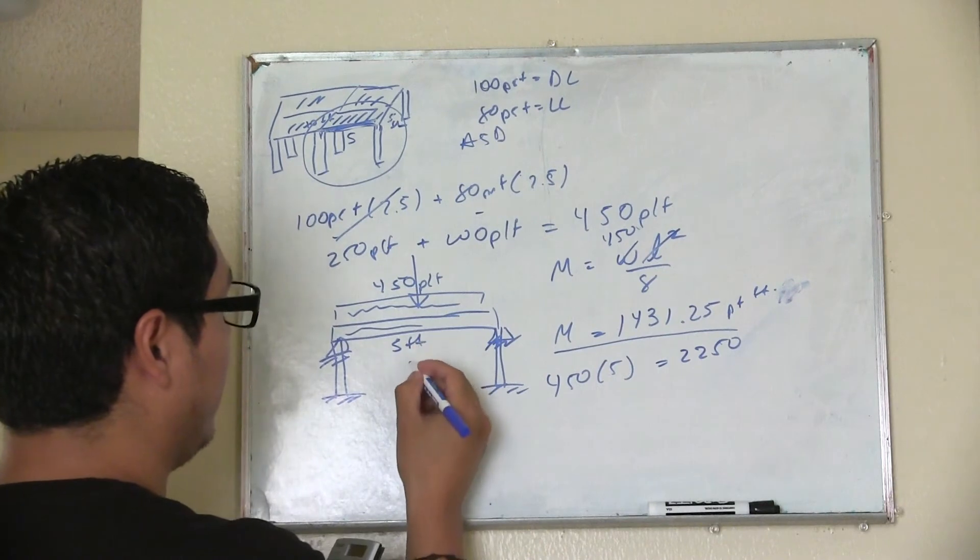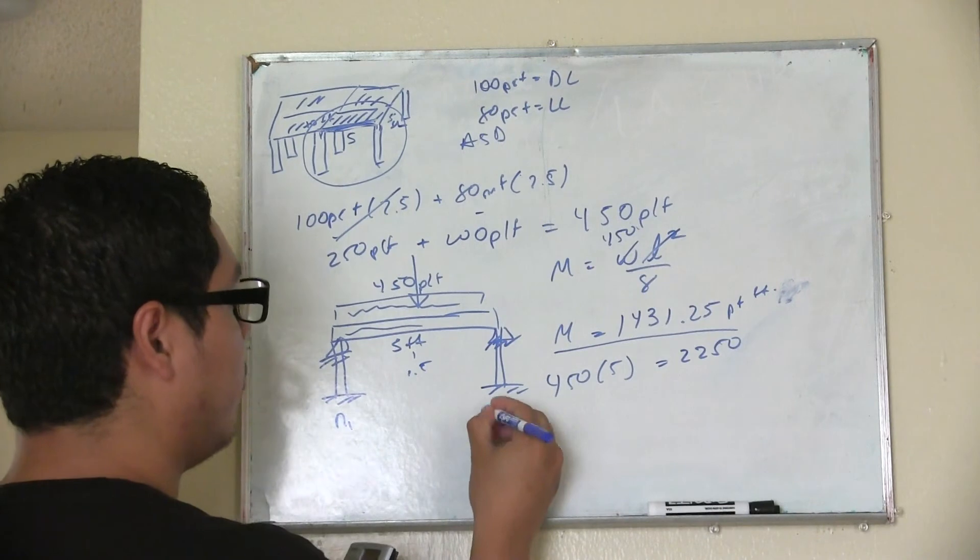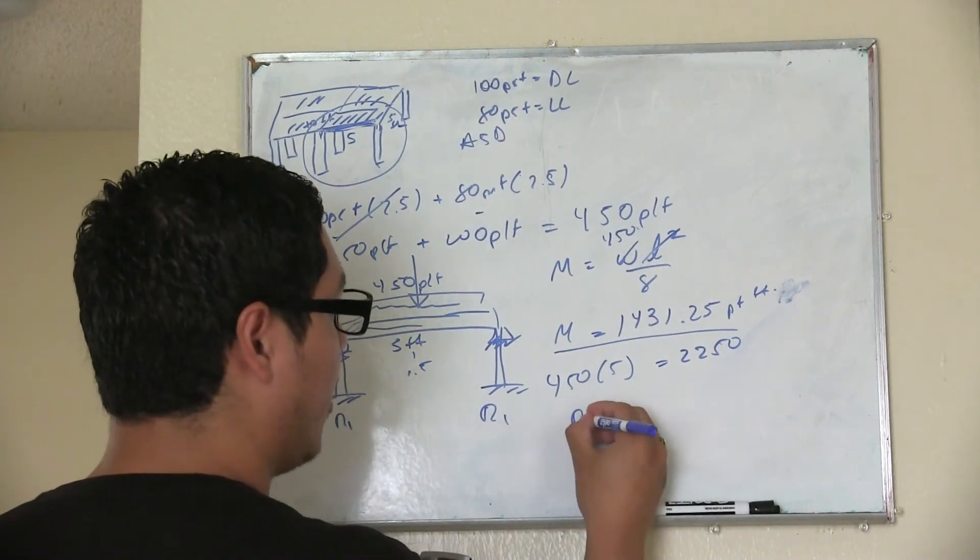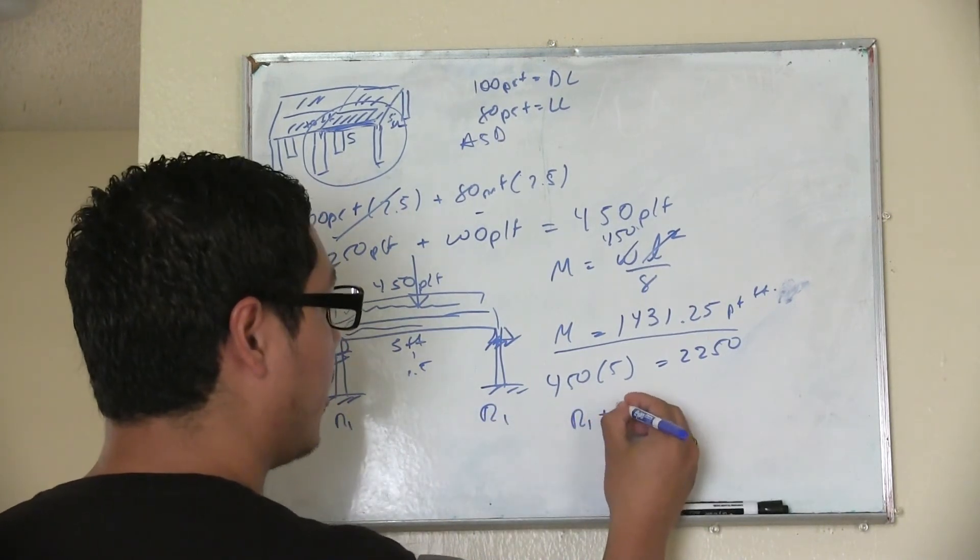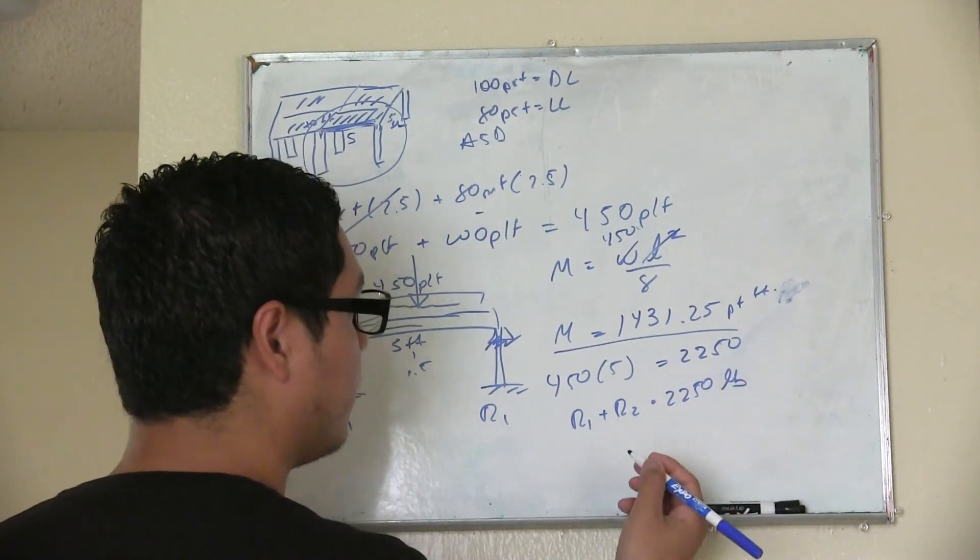Then let's say it's at 2.5. And because there's nothing else going on, let's assume that it's equal. So basically what's going to happen, reaction 1 plus reaction 2 is going to be equal to 2250 pounds.